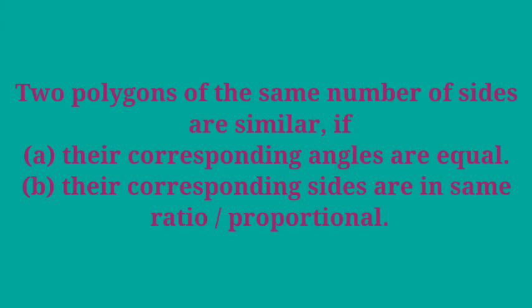If we take two polygons of the same number of sides are similar, it should obey the two conditions. First condition their corresponding angles are equal. And second condition their corresponding sides are in same ratio or in same proportional.